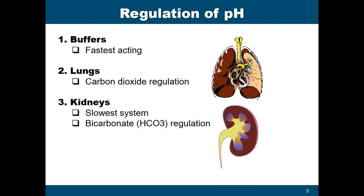The last, and slowest, mechanism to regulate the pH of the body are the kidneys. The kidneys are the ones that regulate your bicarbonate or HCO3. What I would like you to remember is that your lungs and your kidneys work together to maintain a normal pH. Whenever there is a change in the level of carbon dioxide, your bicarbonate will be compensating to ensure that your pH doesn't result in a very abnormal reading that could cause the death of your patient.